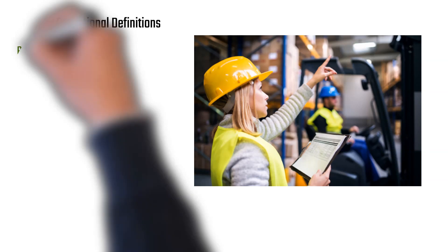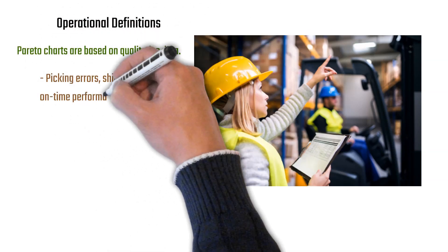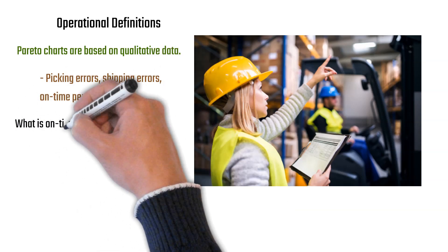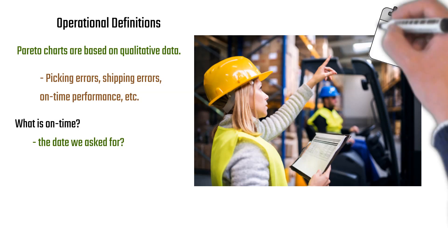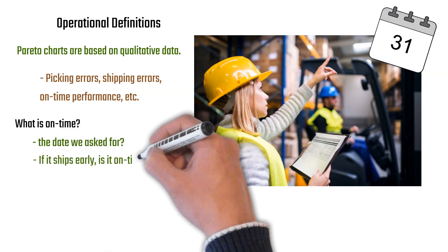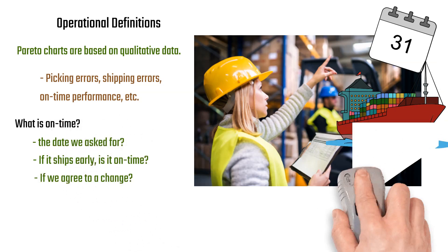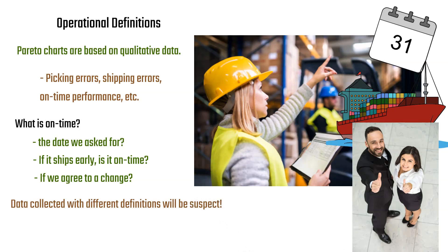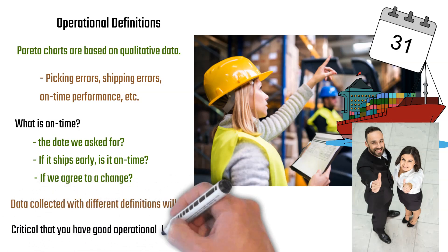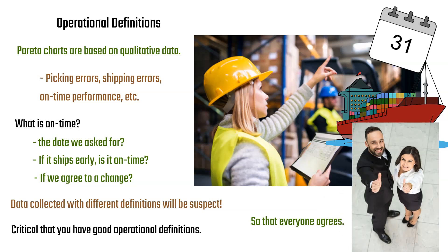Operational definitions are very important. Pareto charts are typically based on qualitative data — picking errors, shipping errors, on-time performance. For example, what is 'on time'? Is it the date we asked for it? If we shipped early, is it still on time? If we agreed to a change in the due date, is it still on time? Data collected with different definitions will be suspect, so it's critical to have good operational definitions that everyone agrees on.